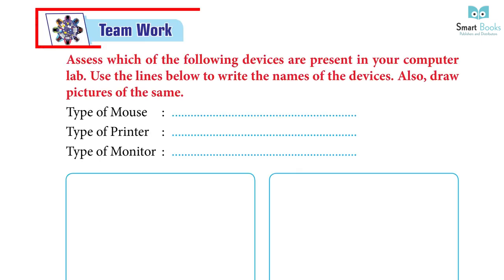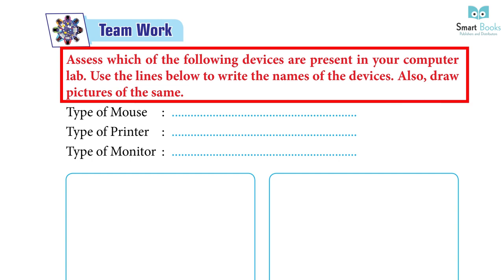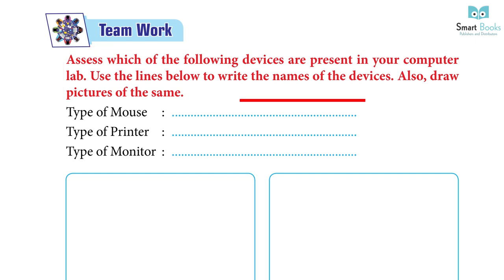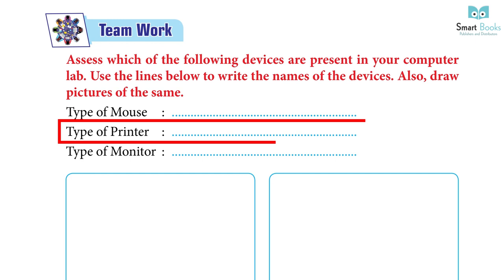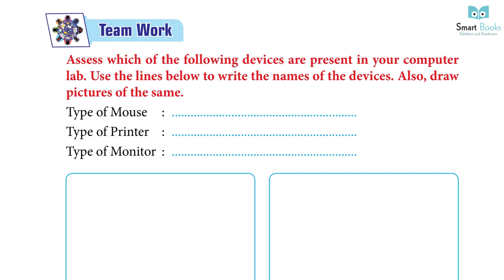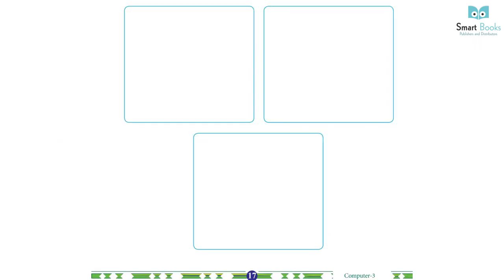Team Work Activity: Which of the following devices are present in your computer lab? Use the lines to write the names of the devices. Also draw pictures of the same. Type of mouse, type of printer, type of monitor. Answer: Do it yourself.